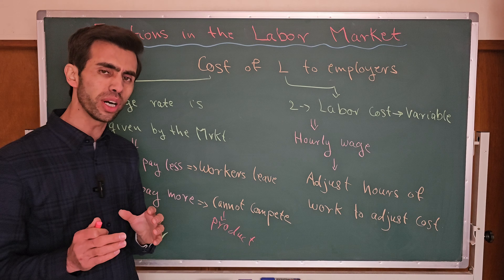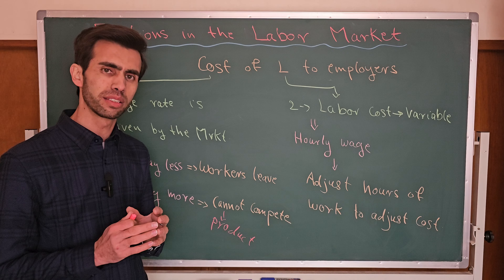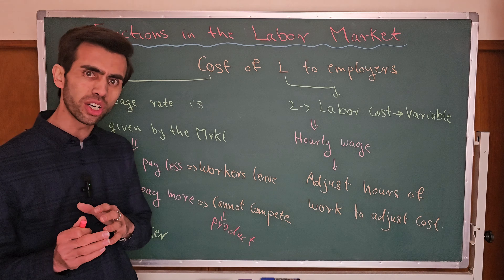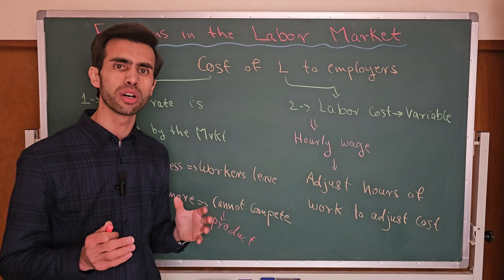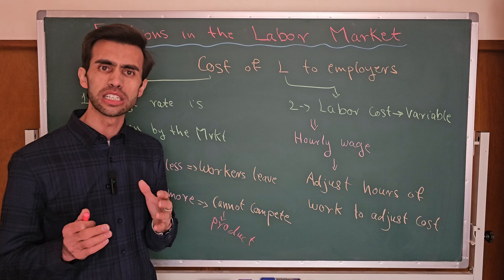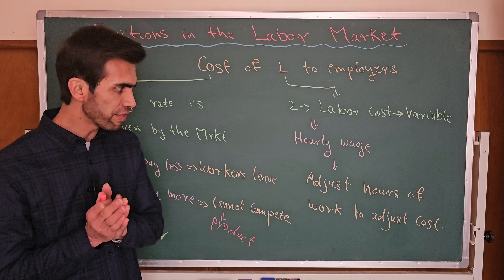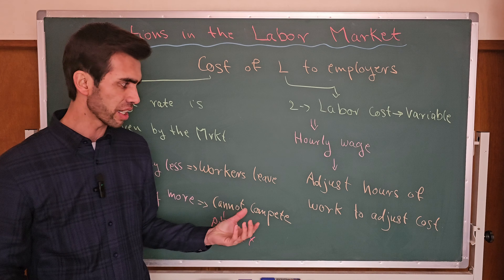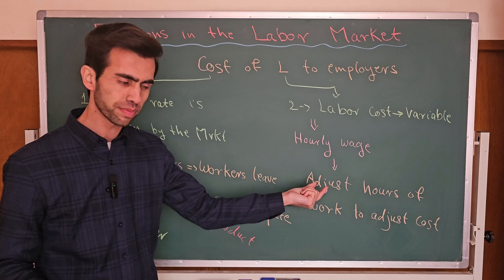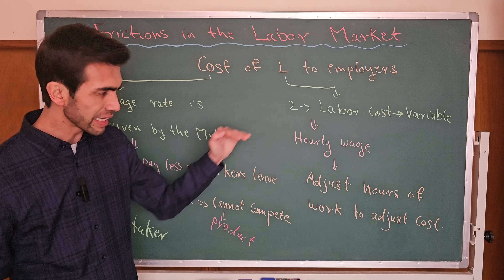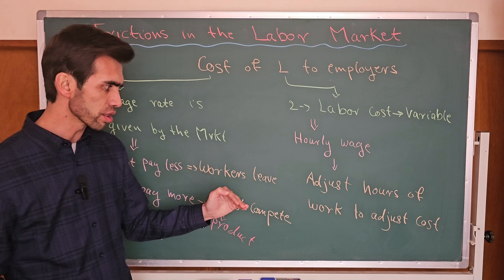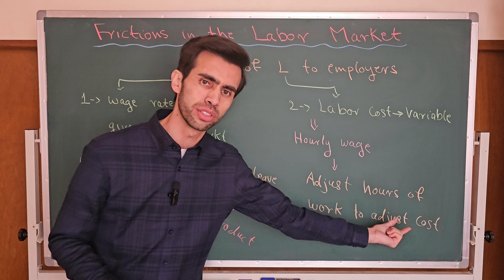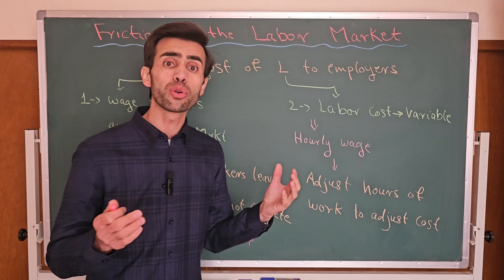If a company or employer wants to adjust overall cost, in the short run employers mostly cannot change their capital cost because capital is fixed in the short run. So one of the factors that an employer can change in its cost structure is by changing the hours of work. When a company wants to adjust costs, what they do is adjust the hours of work.